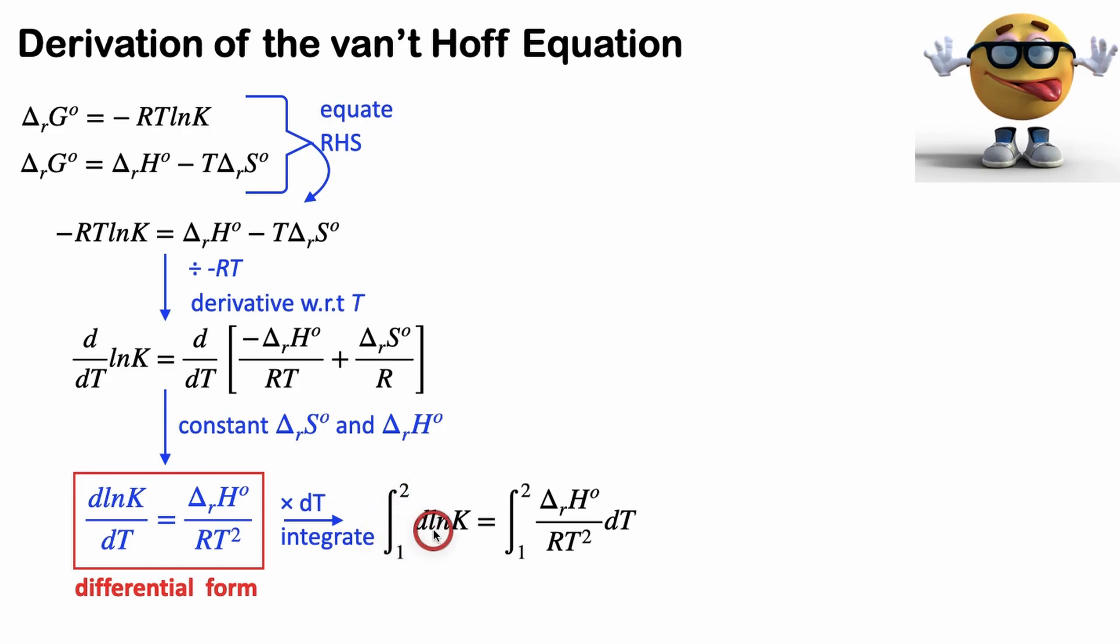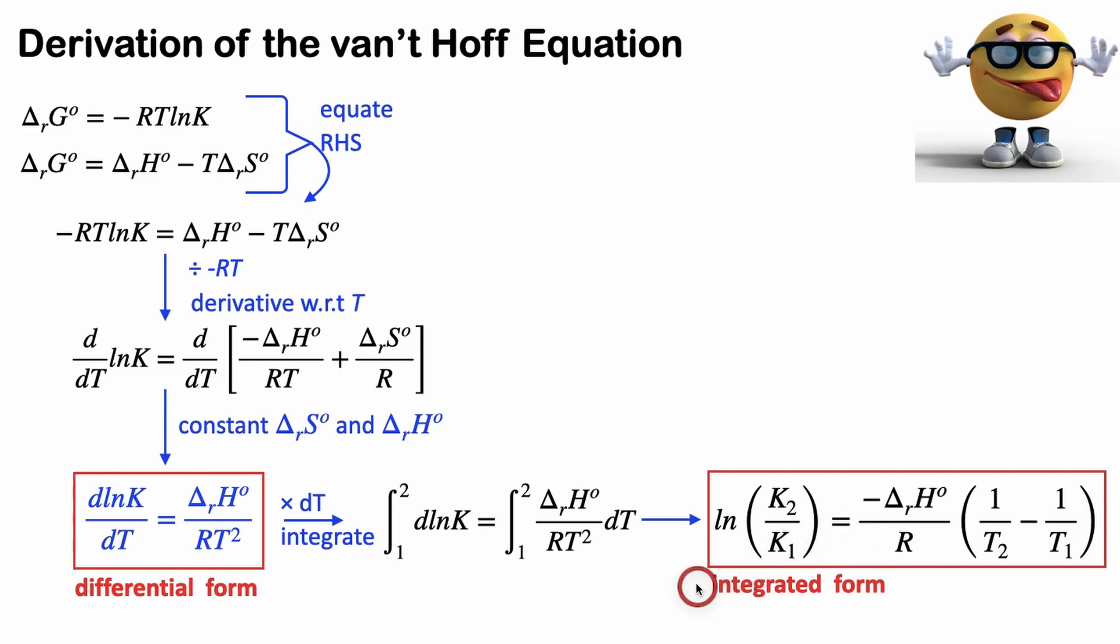So this is like the integral of dx, which is just X. So we just have ln K, remember the limits of integration, and then everything on the right is constant except for the T squared. So the integral of 1 over T squared is negative 1 over T with our limits of integration. And here we are with the integrative form of the van't Hoff equation. So that's cool.